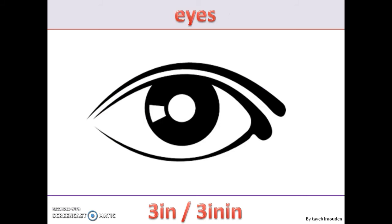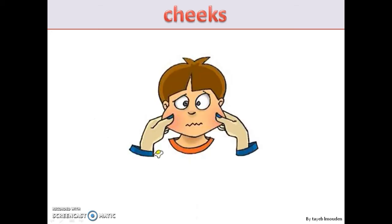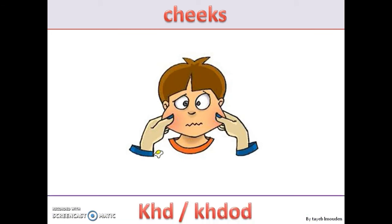عين — eye. عينين — two eyes; عينين is plural. خد — cheek. خدود — cheeks, two cheeks.